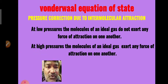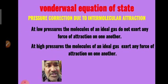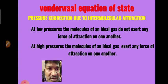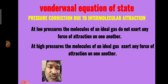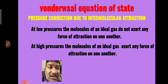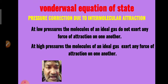Next we go for the correction made to the pressure. At low pressures, molecules of an ideal gas do not exert any force of attraction on one another because they remain far away from each other. But when high pressures are used, the gas molecules come close to each other, and as a result, attractions among the gas molecules begin to operate.